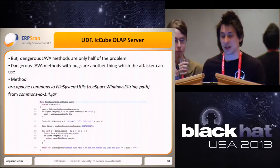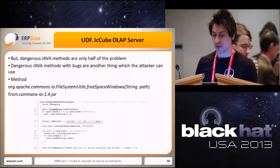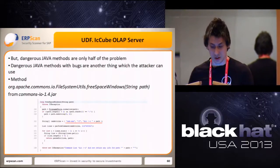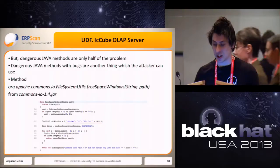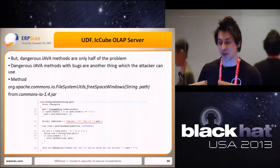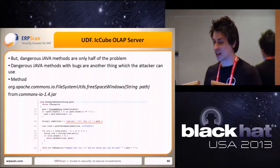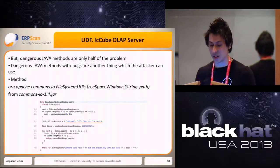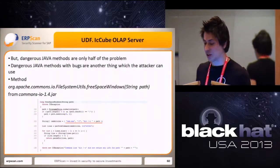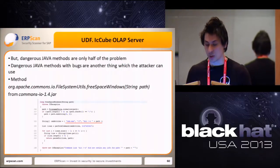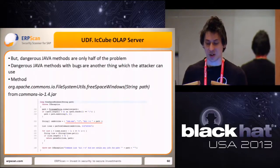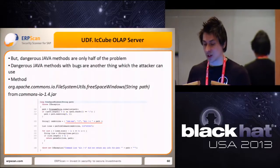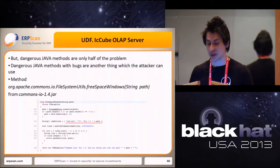But this is not the end of the adventure with user-defined functions. Removing dangerous methods is only half of the problem. The other half is methods which contain vulnerabilities themselves. For example, there is a method called FreeSpaceWindows, which returns information about the hard drive space occupied by a certain directory — but look at how it's implemented.